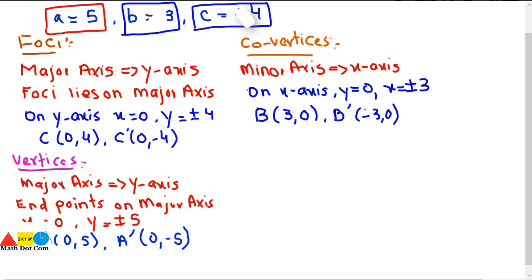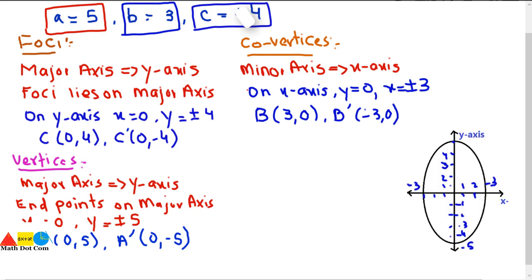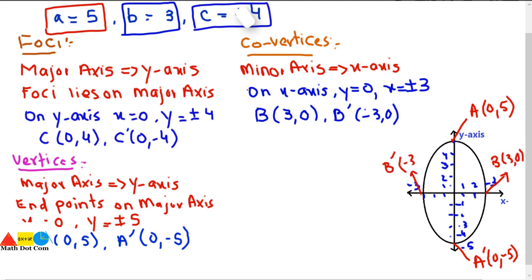The ellipse is elongated on the y-axis. Labeling the diagram: vertex A(0, 5) at the top, vertex A′(0, −5) at the bottom, co-vertex B(3, 0) on the right, co-vertex B′(−3, 0) on the left, focus C(0, 4) above center, and focus C′(0, −4) below center. The major axis is the y-axis and the minor axis is the x-axis.